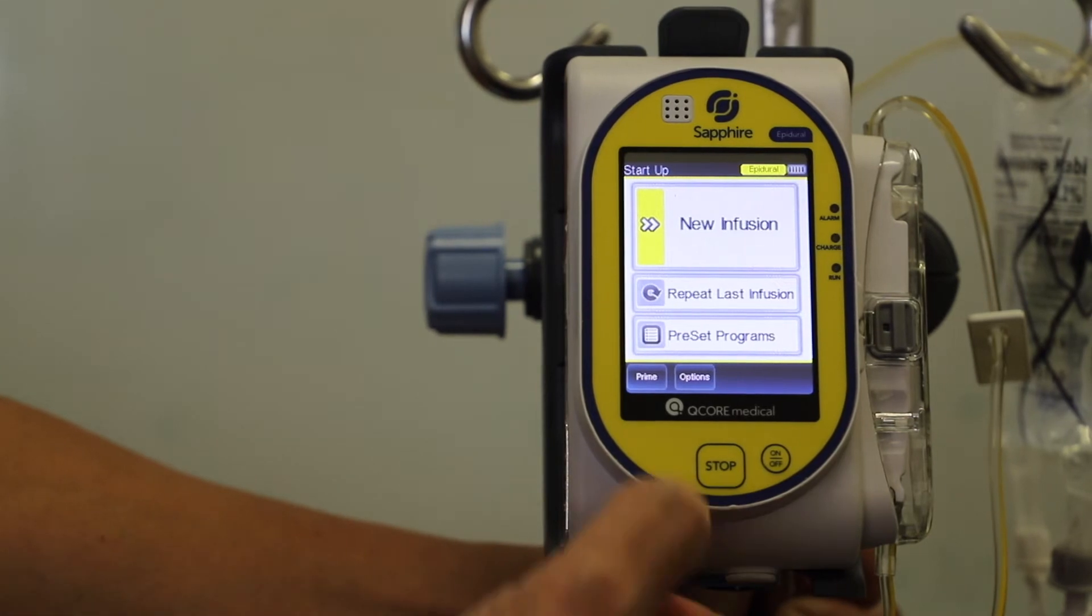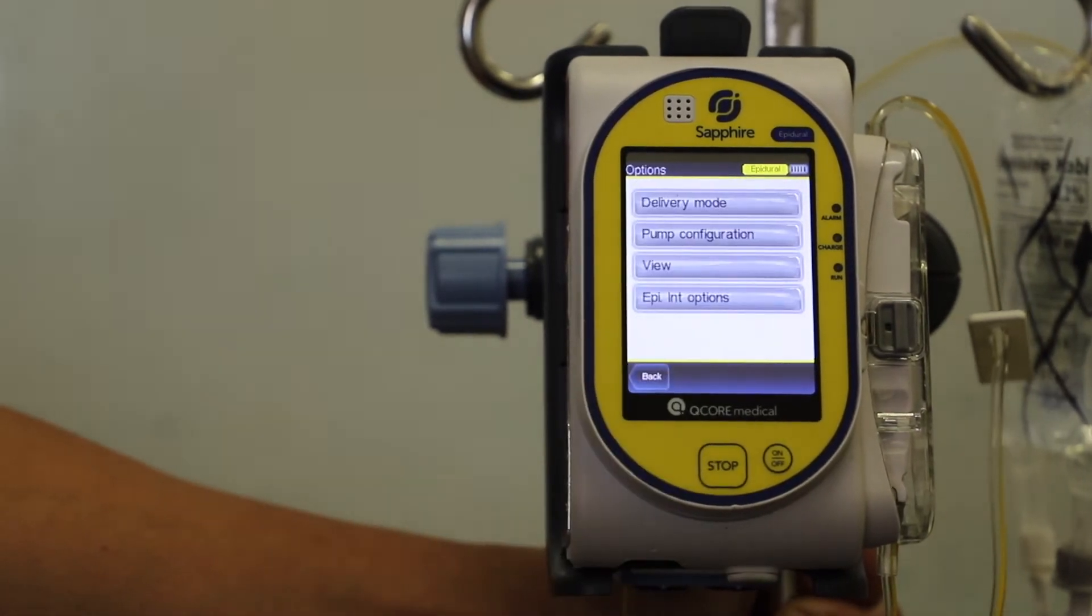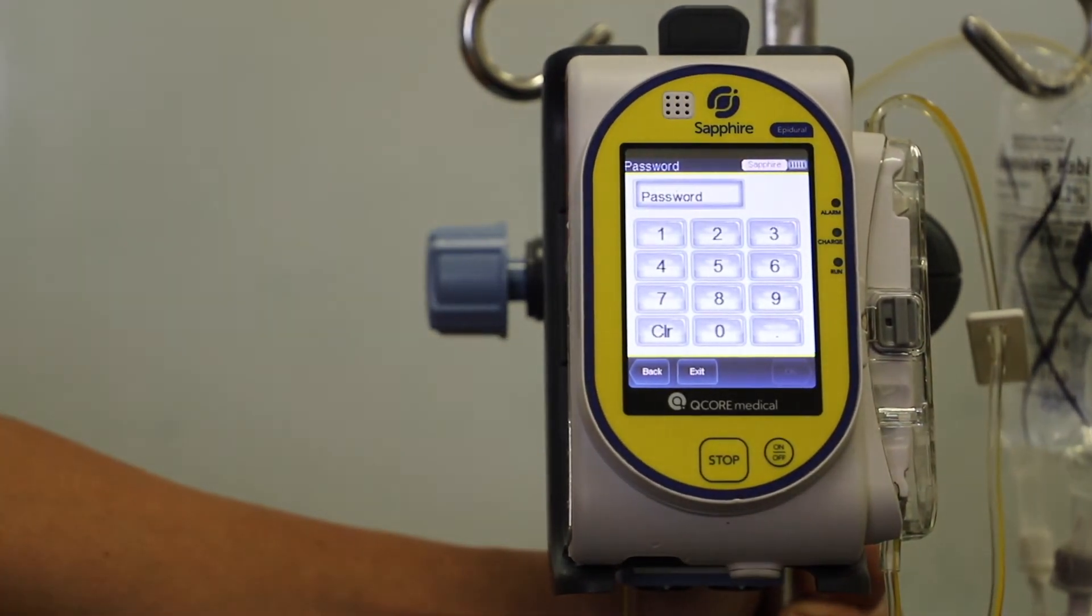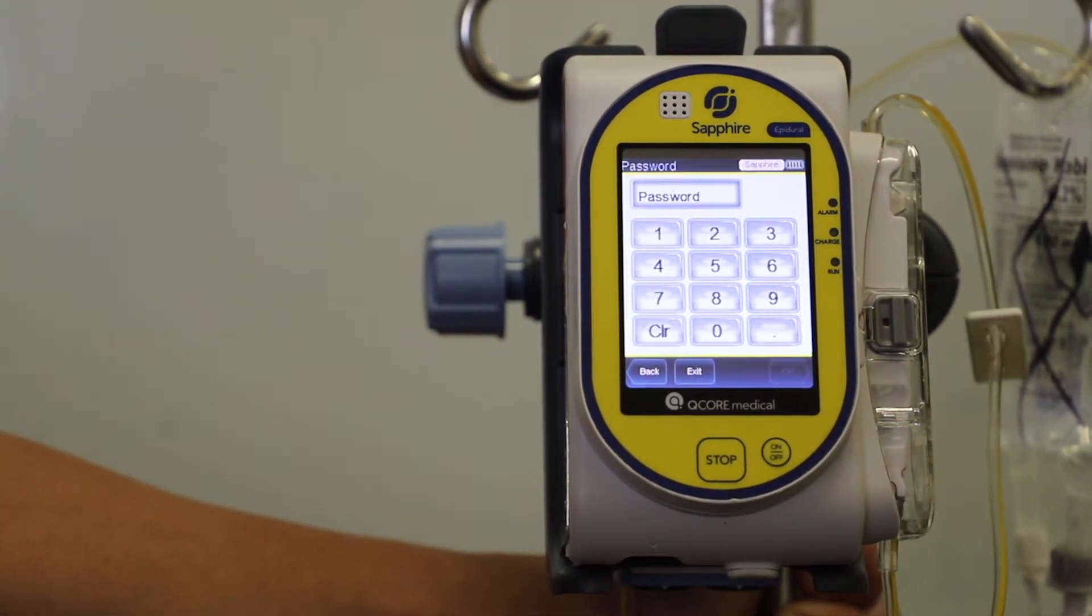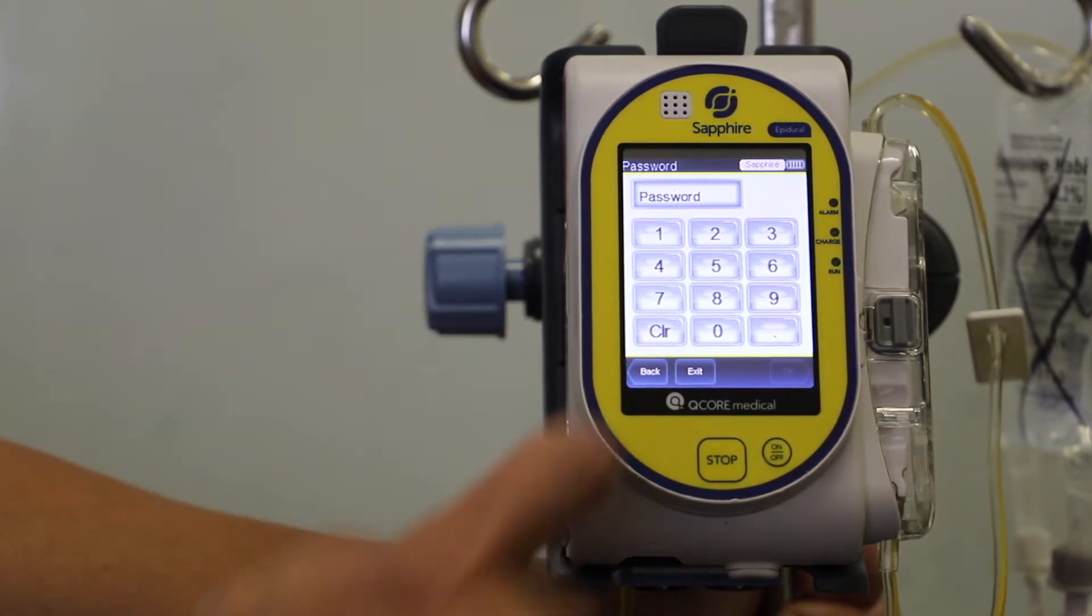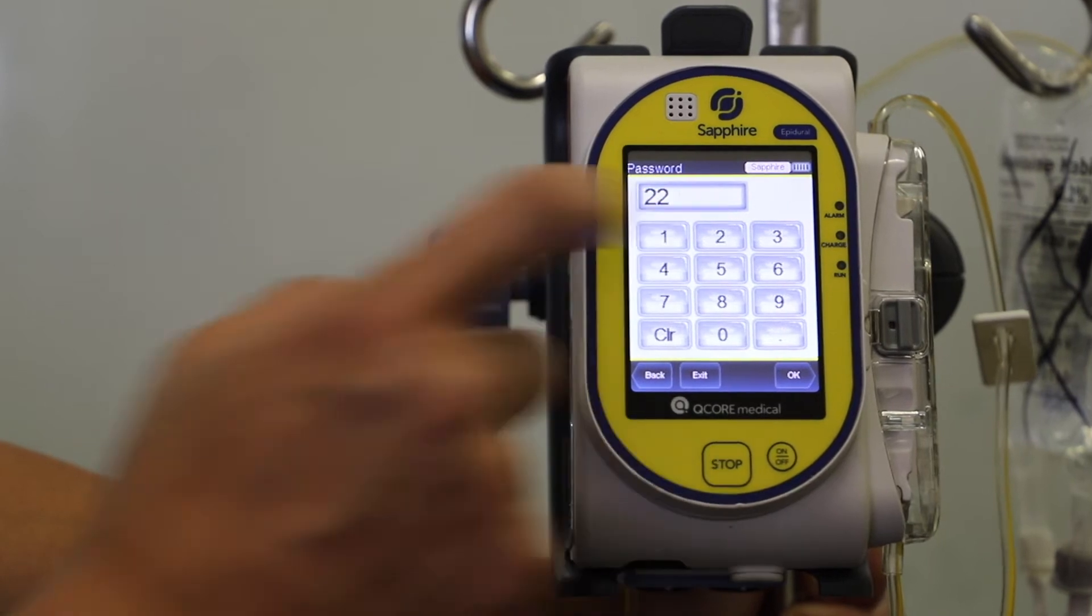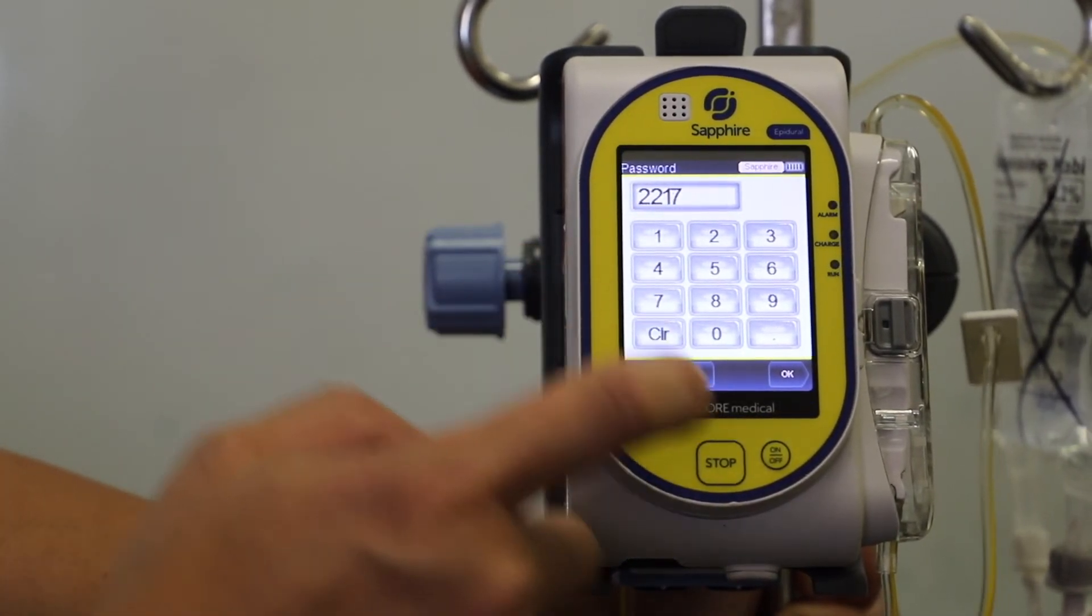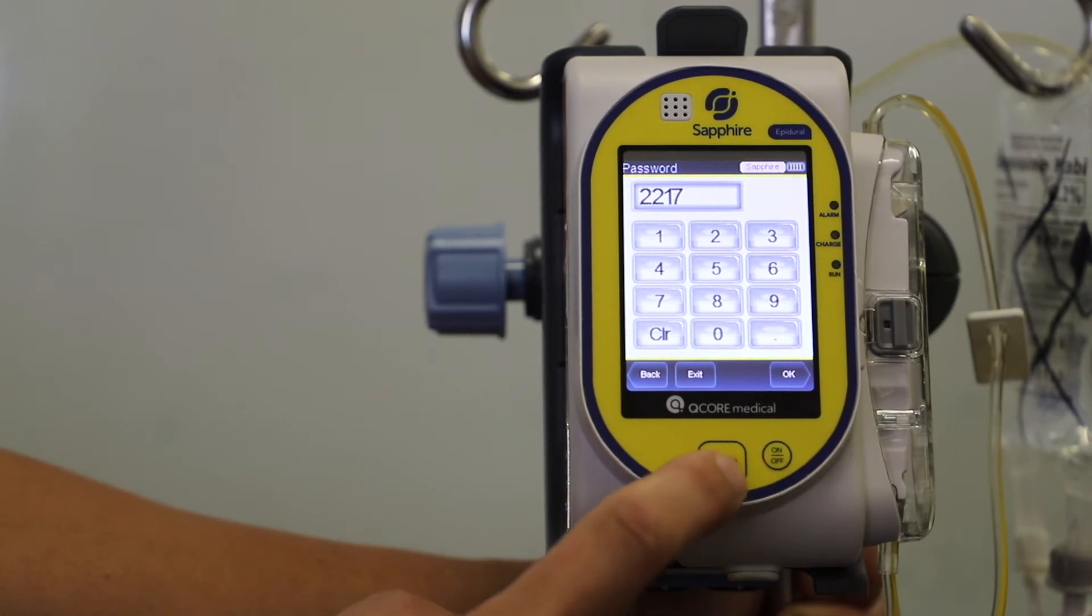So in order to do that, you go to options, go to delivery mode, put in your password, which is the 2217 postcode, and press OK.